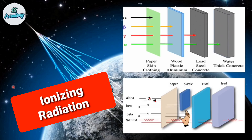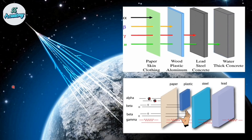Earlier you have learned in detail about different kinds of nuclear decays or radioactive decays like alpha decay, beta decay, and gamma decay. Now, these radioactive decays occur in unstable nuclei. These nuclei do not have enough binding energy to hold the nucleus together due to an excess of either protons or neutrons.